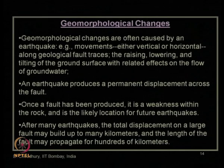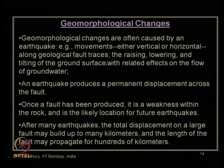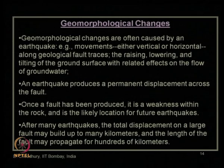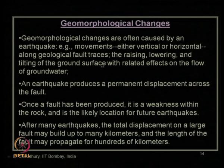Due to earthquake, various geomorphological changes also occur. The ground surface will either move vertically up or down, and also horizontally. Geological fault traces will form, causing raising, lowering, and tilting of the ground surface. These changes can also affect the flow of groundwater — for example, if a region at higher gradient settles so much after an earthquake that it becomes a lower gradient, the groundwater flow will change its direction.